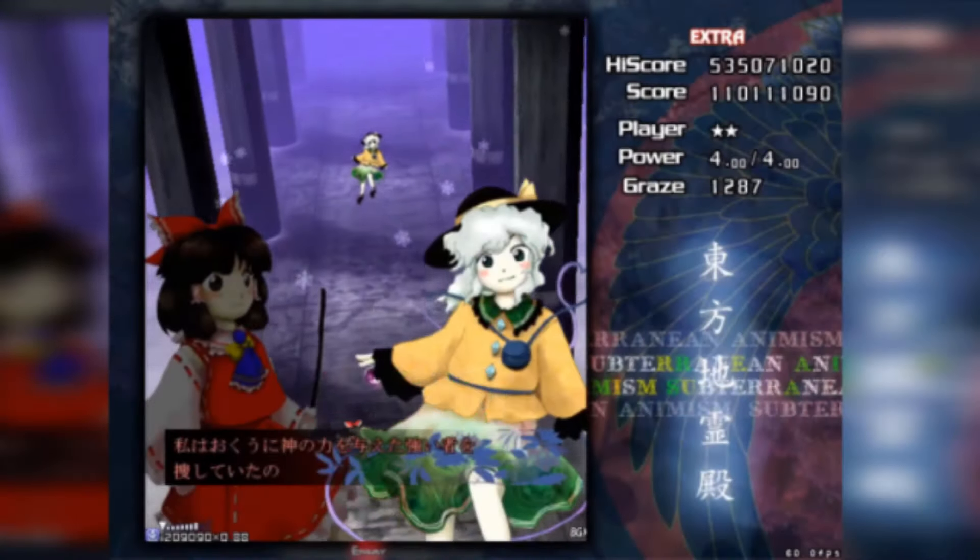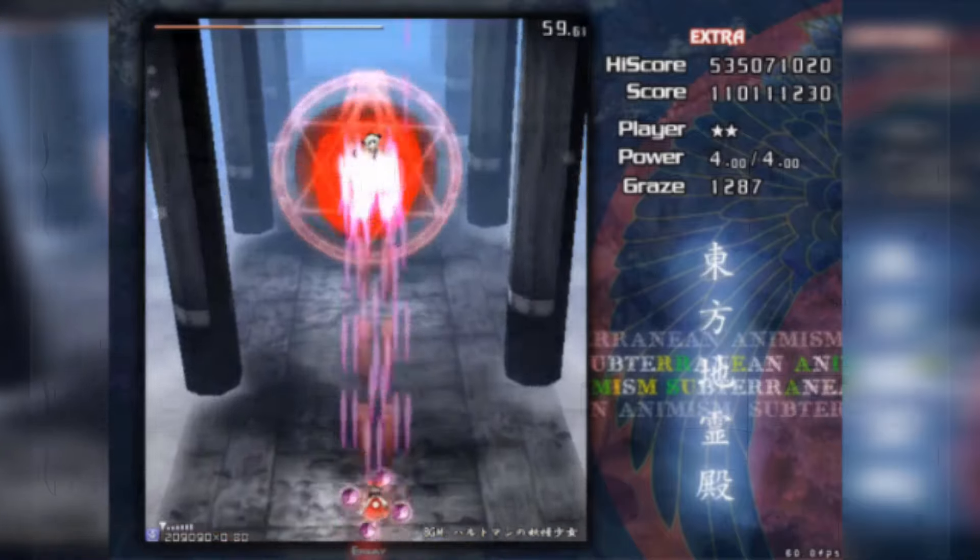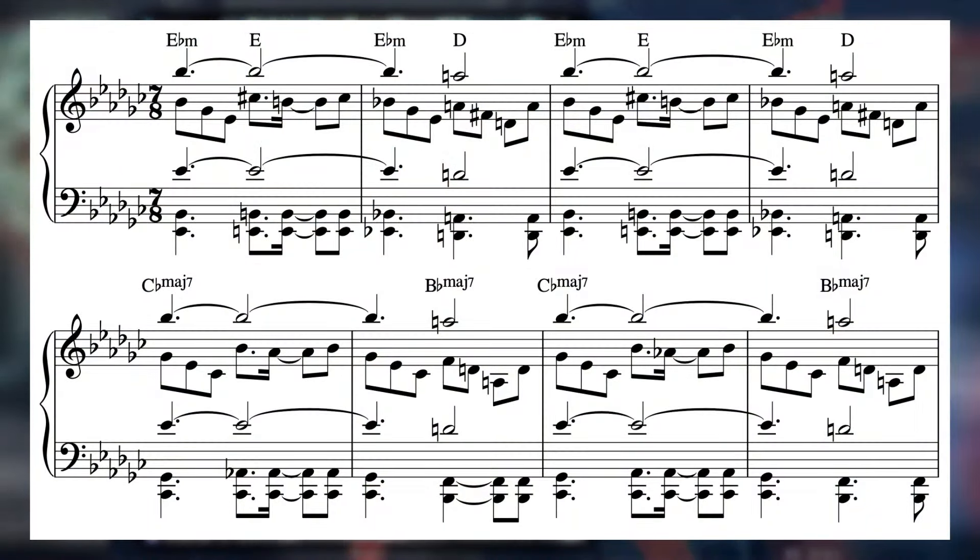In Hartman's Yokai Girl from Subterranean Animism, the main section of the piece is wild and hectic, with choppy, syncopated rhythms and chromatic chord movements assaulting you in a fast-paced 7-8 time signature. The harmony keeps close to the tonic Eb minor chord, but slides around to the chords a half-step above and below it to create a frantic feeling.